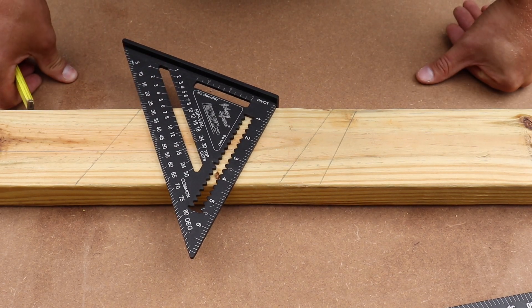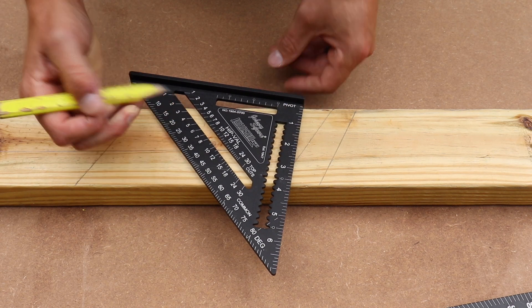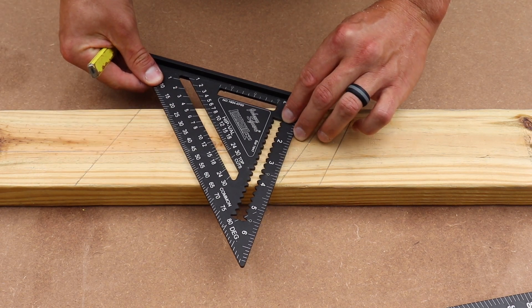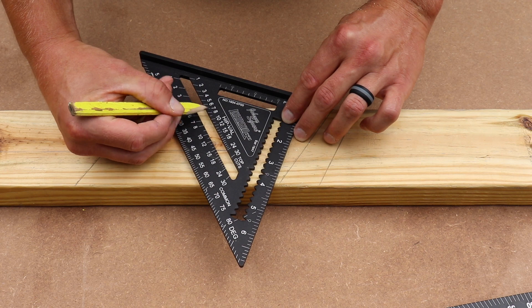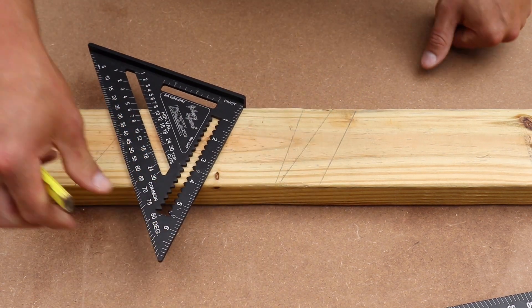Now, if you're doing hip or valley, it'd be the same idea. So 6/12 for your hip. We're going to rotate that out. The 6 right here for your hip and valley rafters. And we're going to mark it just like that.